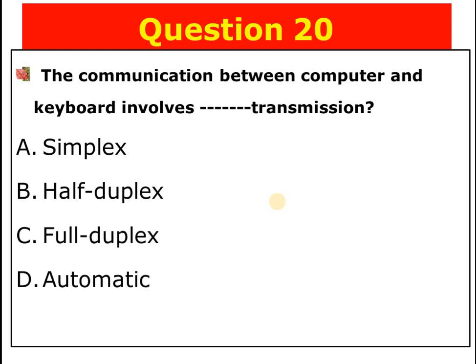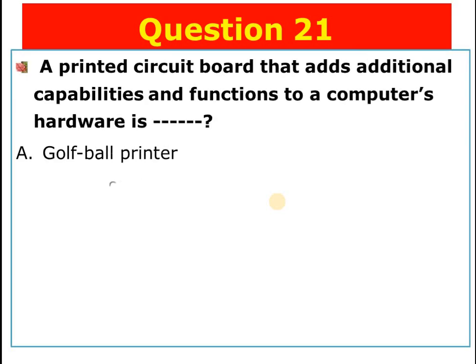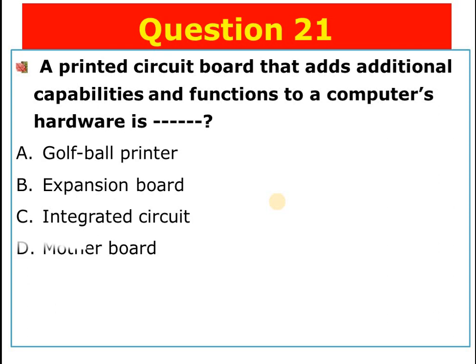Question number twenty: The communication between a computer and keyboard involves blank transmission. A) Simplex, B) Half duplex, C) Full duplex, D) Automatic. The answer is A — simplex.